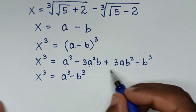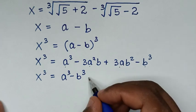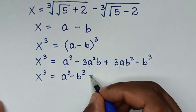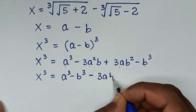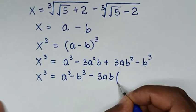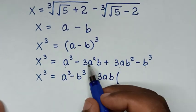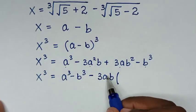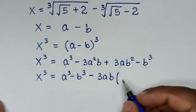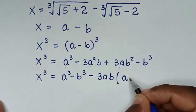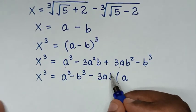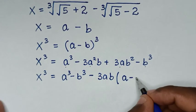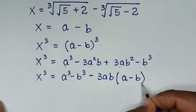From the expanded expression, we take negative 3ab out of the bracket from the middle terms, giving us negative 3ab times (a minus b).